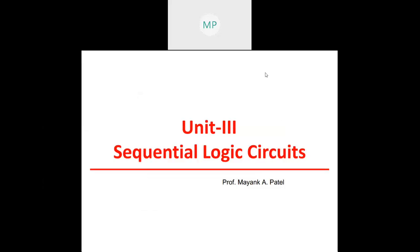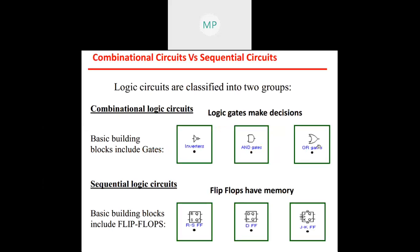Let's start unit number three: sequential logic circuits. Generally, logic circuits are classified into two main groups: combinational logic circuits and sequential logic circuits. In the previous lecture we discussed combinational logic circuits; in this chapter we are going to learn about sequential logic circuits.